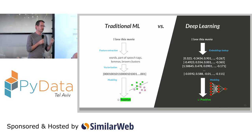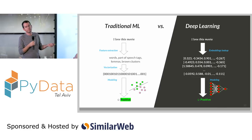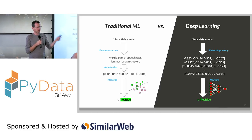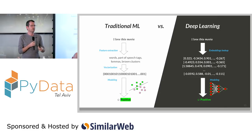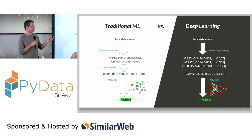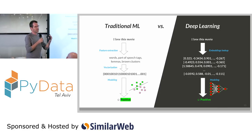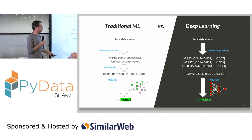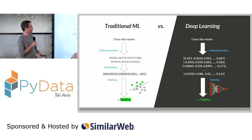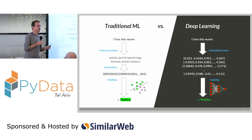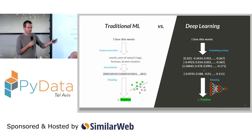Once you extract words, you can extract more linguistic features: part-of-speech tags, lemmas — the base form of words without prefixes and suffixes, which is very effective for highly inflected languages like Hebrew and Arabic. Once we extract all these features, we put them together into a mathematical representation like a vector and use that as input for traditional machine learning to build a model and make predictions.